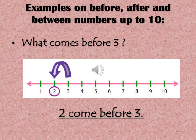In this slide we are going through a few examples of before number, after number, and between numbers on the number line: one, two, three, four, five, six, seven, eight, nine, and ten. Here we are asking: what comes before three? Let's start counting from one.